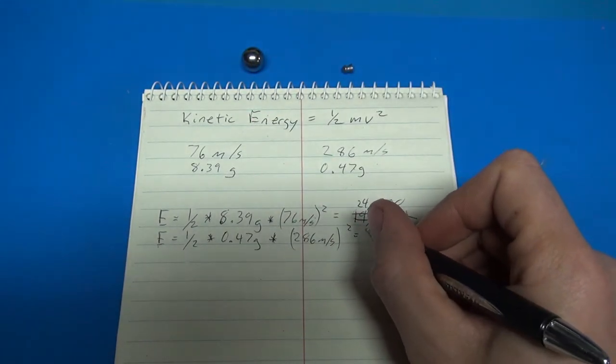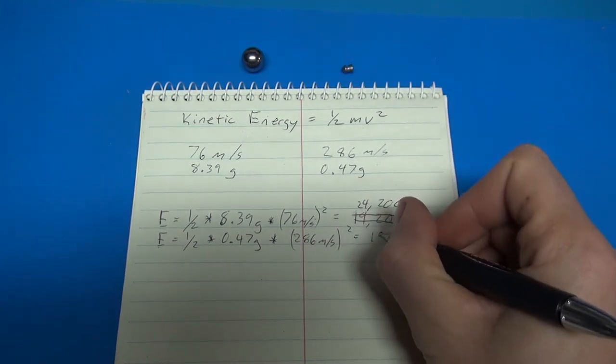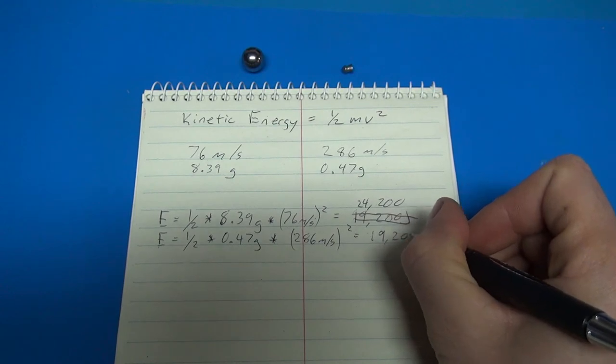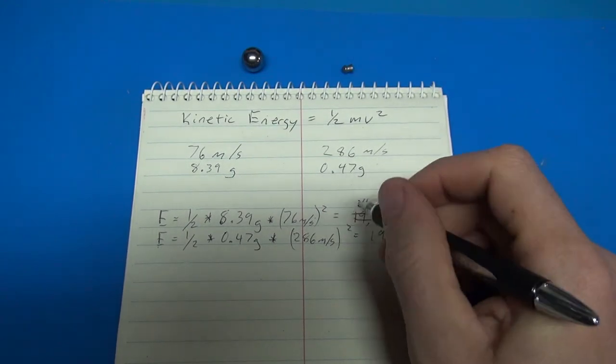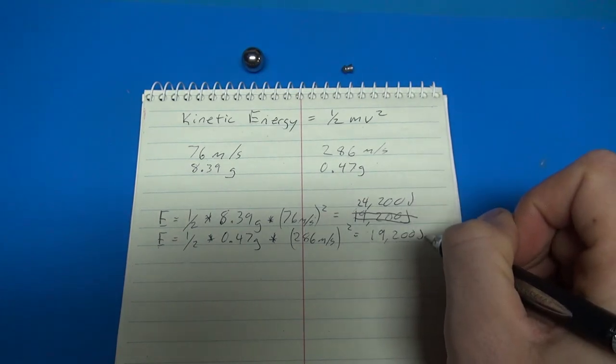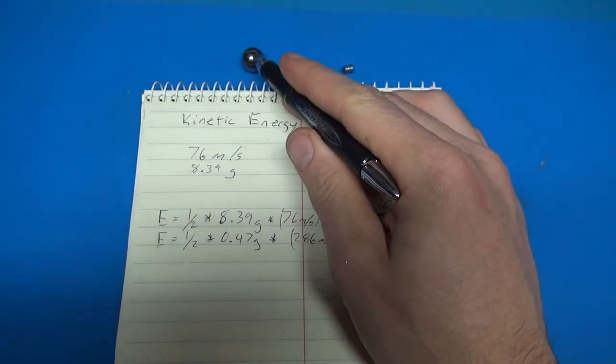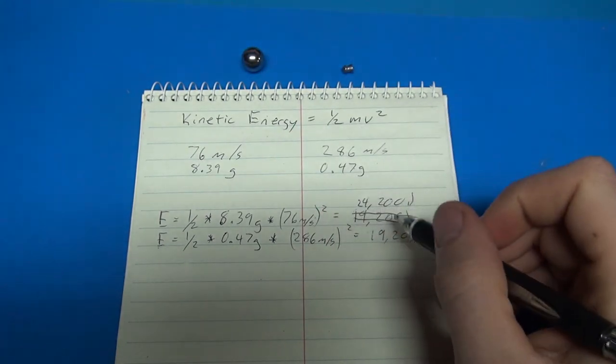Sorry about that. And for the pellet, you'll get this 19,200. Both of those are joules. So we're talking about 24 kilojoules and 19 kilojoules for this one. So there is more energy in this ball bearing, but it's not a big, a lot.